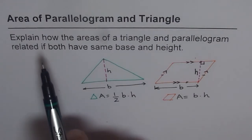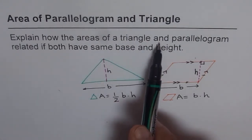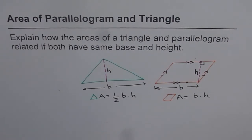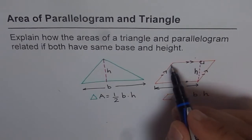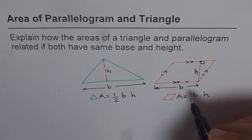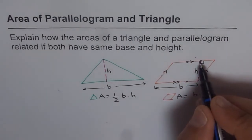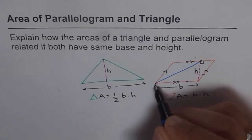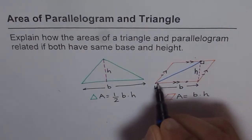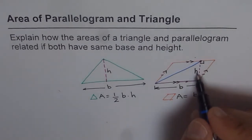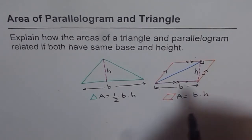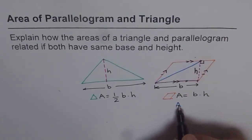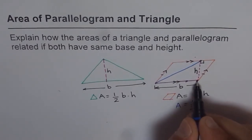The question is: explain how the areas of a triangle and parallelogram are related if both have the same base and height. So both have the same base — let us say this is my parallelogram, and I make a triangle in here. For the same height, I can make a triangle like this. This blue line, along with the height and this side, makes one triangle. Area of this triangle will be half of base b times height h.